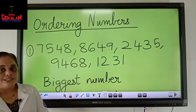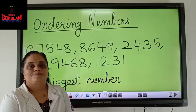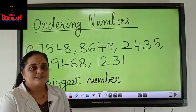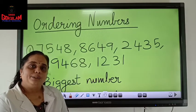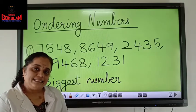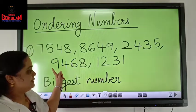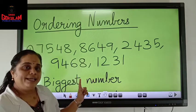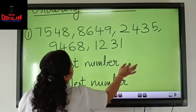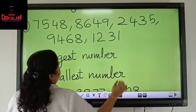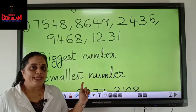Now, children, the next topic that we are going to deal with is ordering numbers. Ordering numbers looks like a very big word, a new word for us. But it's nothing but finding out the biggest number and the smallest number. You will be given a group of numbers, and in that group you have to identify which is the biggest number and which is the smallest number. That's all you have to do.